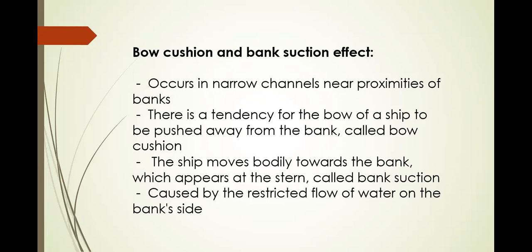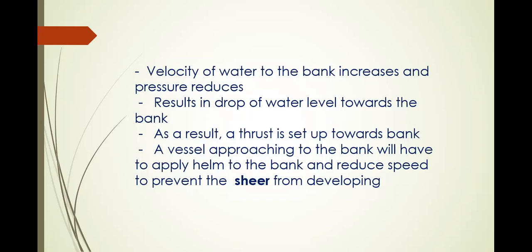Bow cushion and bank suction effect occur in narrow channels near proximities of banks. There is a tendency for the bow of the ship to be pushed away from the bank — called bow cushion. The ship's stern moves badly towards the bank — called bank suction. So the bow moves away while the stern is drawn towards the bank. Velocity of water toward the bank increases and pressure reduces, resulting in a drop of water level toward the bank. A vessel approaching the bank must apply helm toward the bank and reduce speed to prevent the shear from developing.